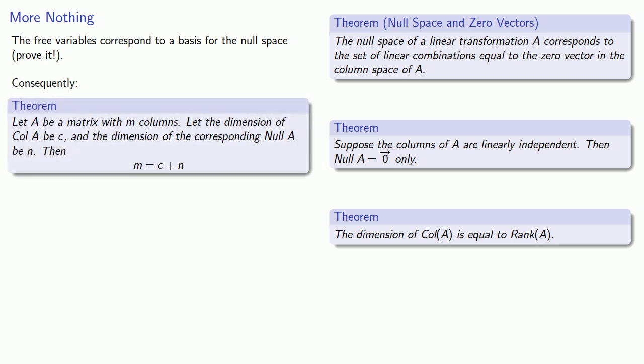Suppose I have a matrix with m columns and let the dimension of the column space of A be C and the dimension of the corresponding null space of A be N, then m is equal to C plus N.